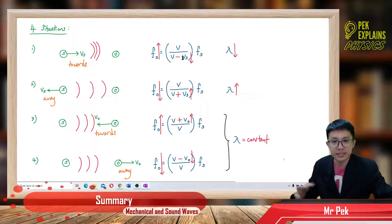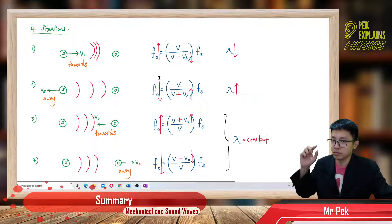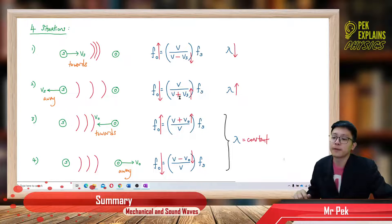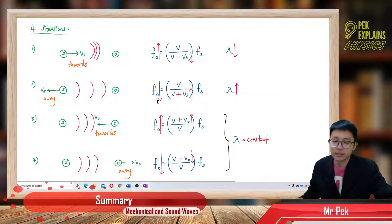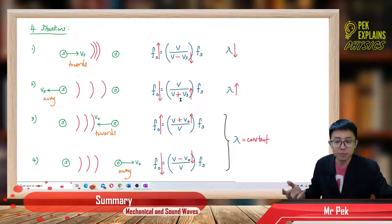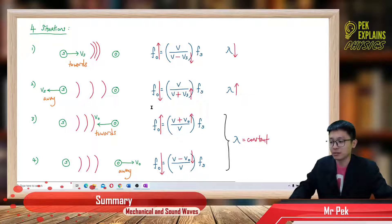For the second situation, the source is moving away — frequency should decrease. To make the denominator larger (decreasing the frequency), we use plus: v plus vs. This makes the bottom bigger, so the observed frequency decreases.